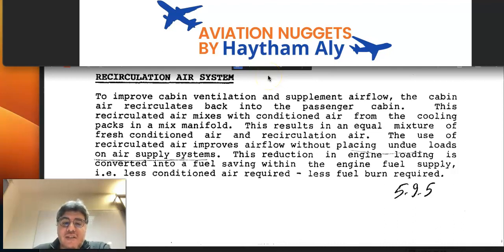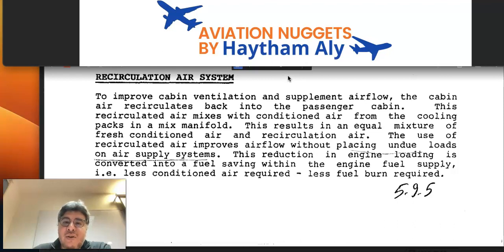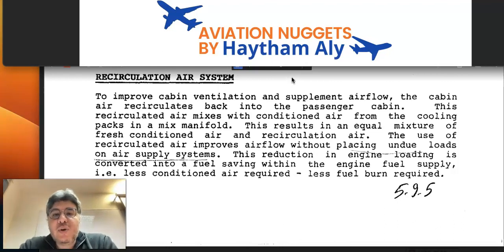If you study the air conditioning system of any aircraft, you will study the recirculation air system. Some air from the cabin will mix with the air coming from the air conditioning packs in a mixing manifold or mixing chamber. This is to reduce the load on the engine bleed air — we need to decrease the load on the engine to reduce fuel consumption.